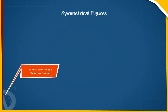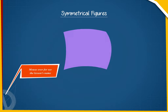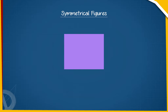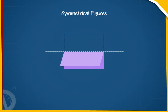Symmetrical figures. Let us take a square. Now we fold it in two equal halves in such a way that both the halves overlap or cover each other exactly.